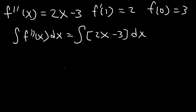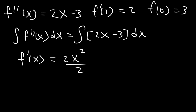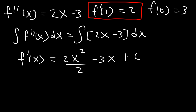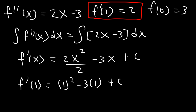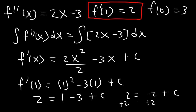Let's begin by integrating both sides. The antiderivative of f double prime is f'(x). On the right side, the antiderivative of x is x squared divided by 2, and for negative 3 it becomes negative 3x plus some constant c. Now we use the initial condition f'(1) = 2. Substituting x = 1: 1 squared over 2, that's 1 minus 3 times 1 plus c equals 2. 1 minus 3 is negative 2, so adding 2 to both sides gives c equal to 4.